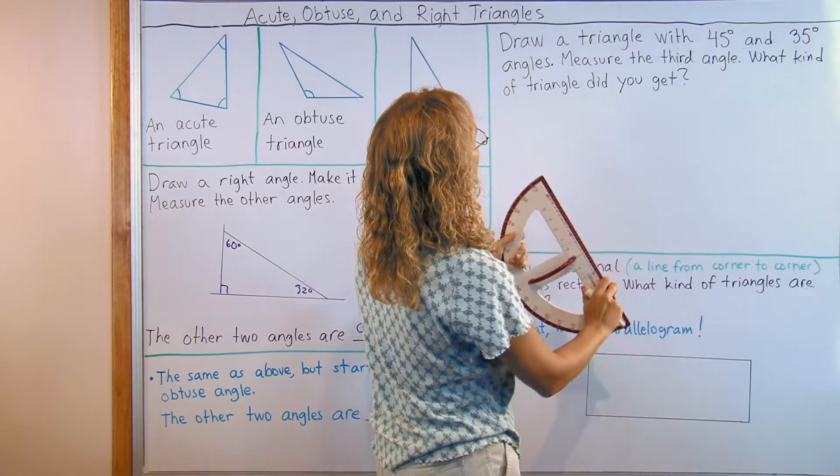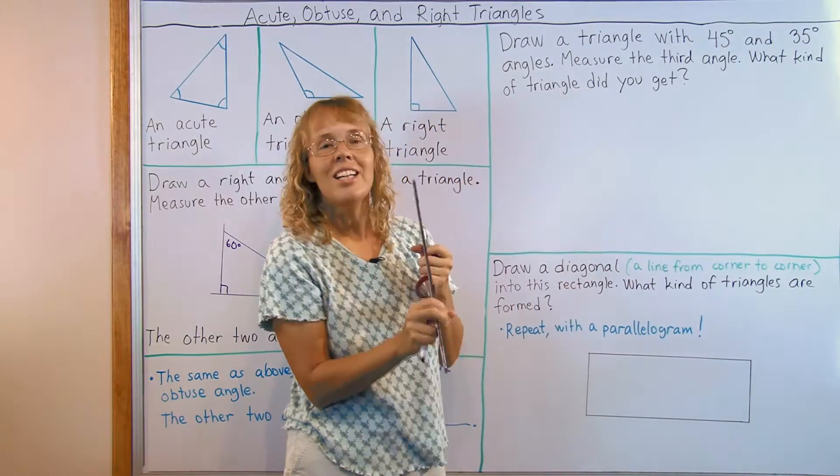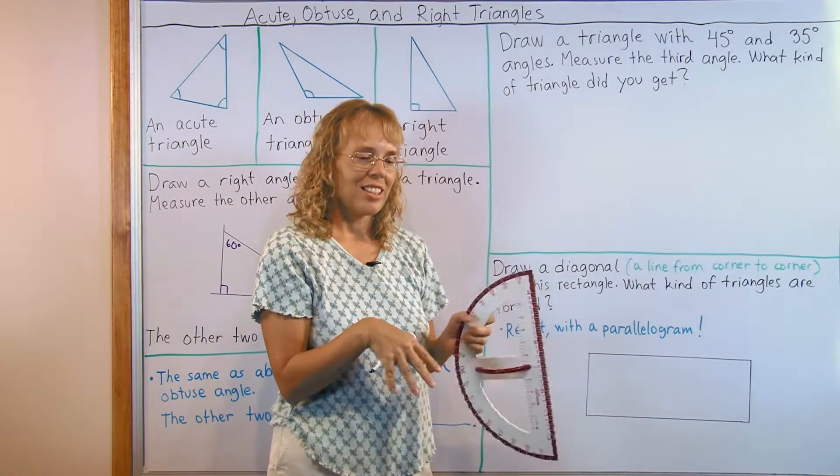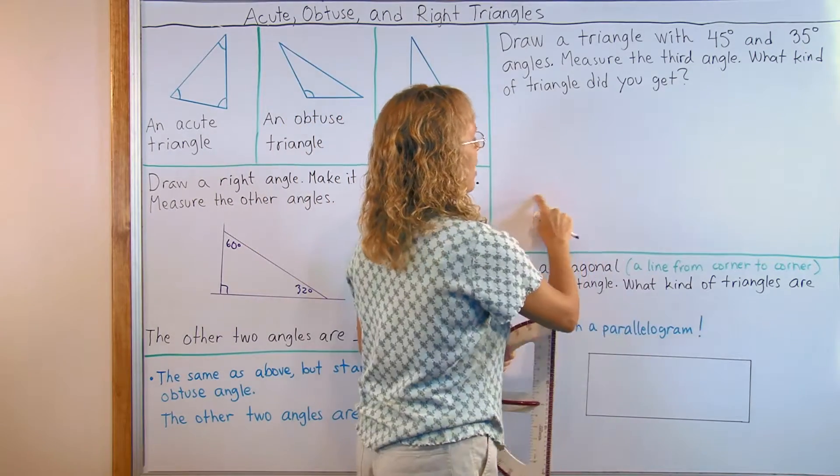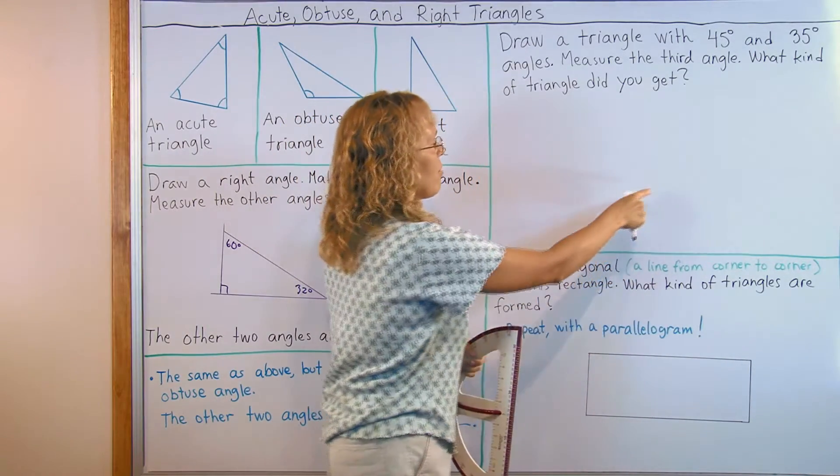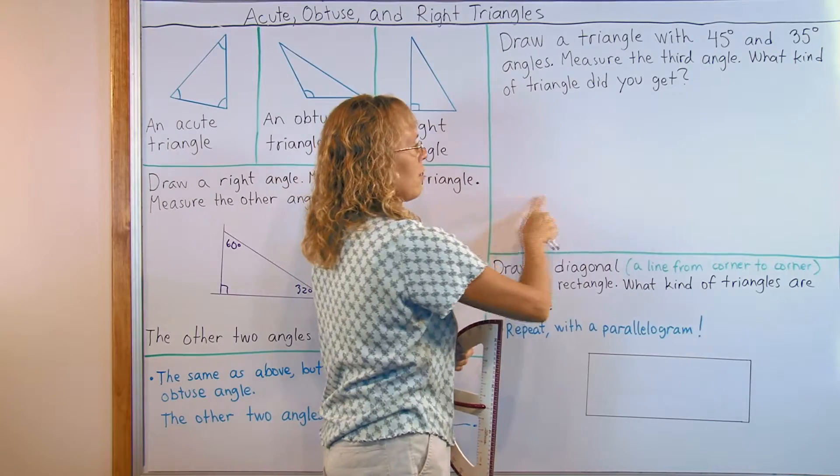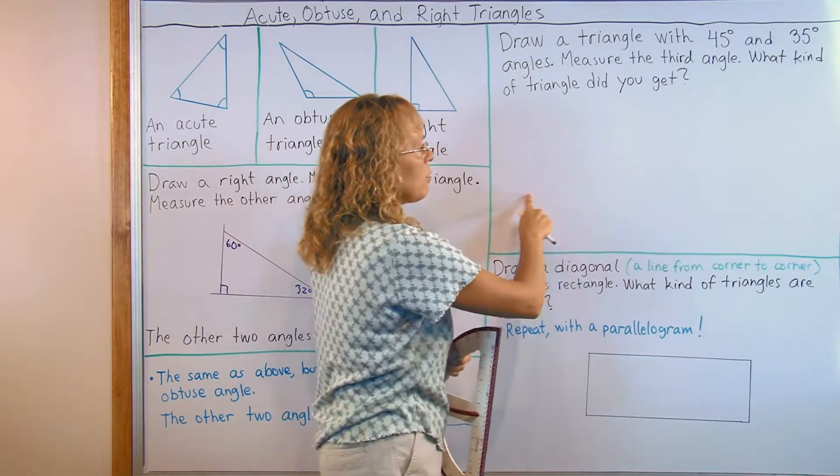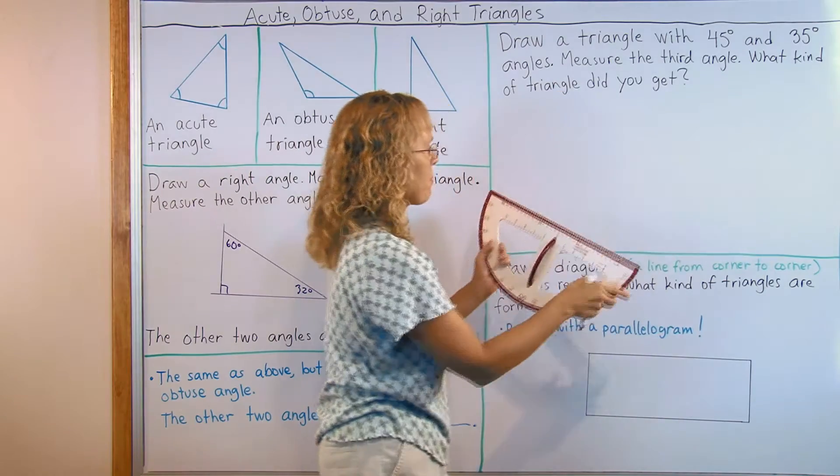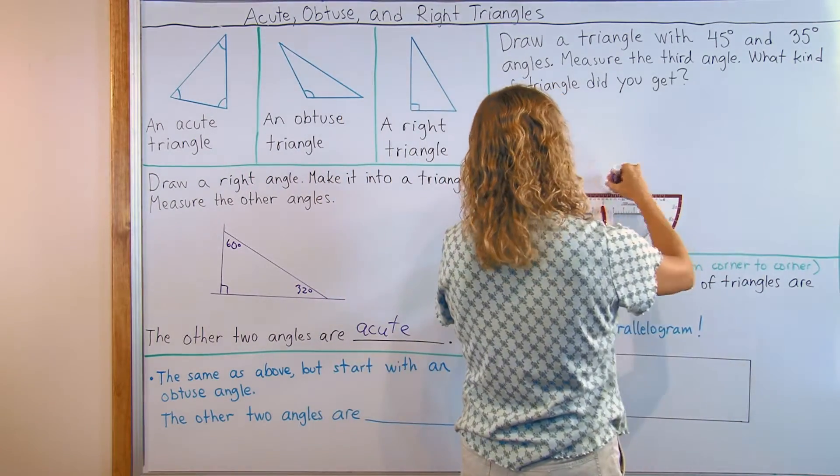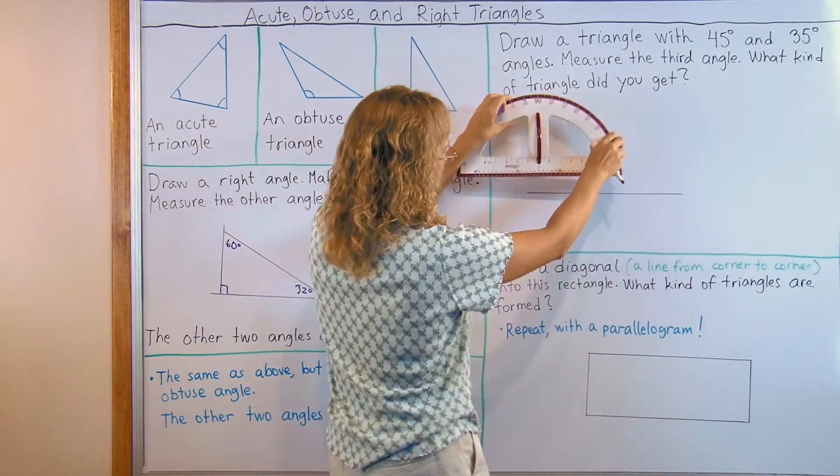I need to first, again it doesn't tell me the side lengths. So I can choose my side length to be any. I'm going to just draw a side here. Then draw my 45 degree angle. It's going to be kind of like this. Then I'm going to draw my 35 degree angle over here.